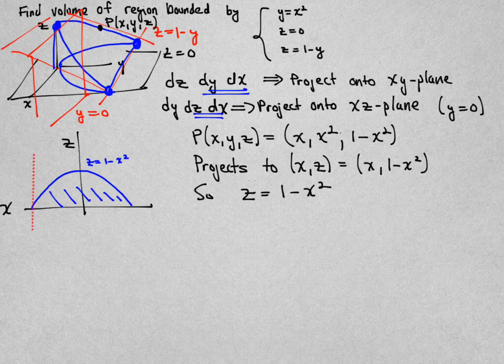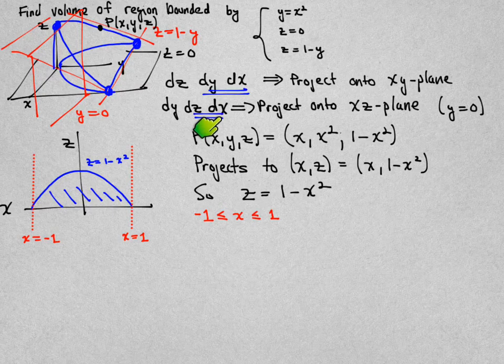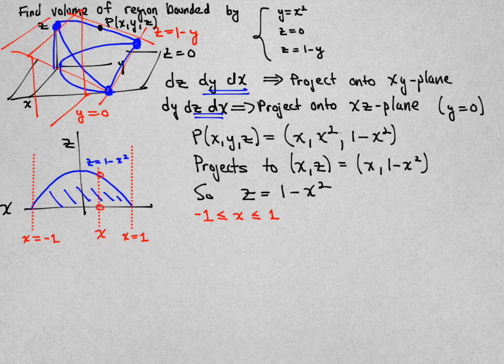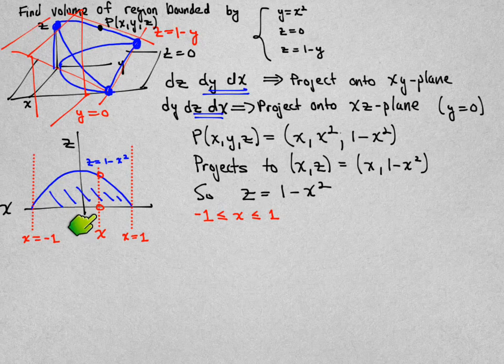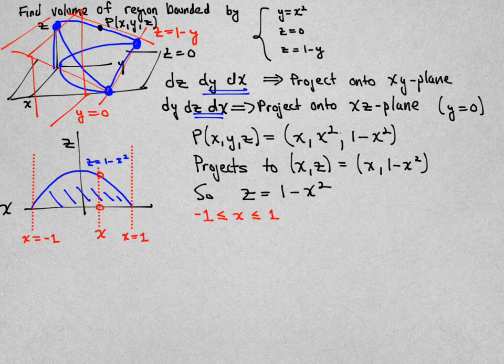I'm now going to set up the integral. And because I have chosen to do x last, I'm going to find the x limits of integration first. So x will go from minus one to one. Take a generic value of x now and let it pass through your region. The z value goes at z equal to zero and ends at z equal to one minus x-squared at the parabola.